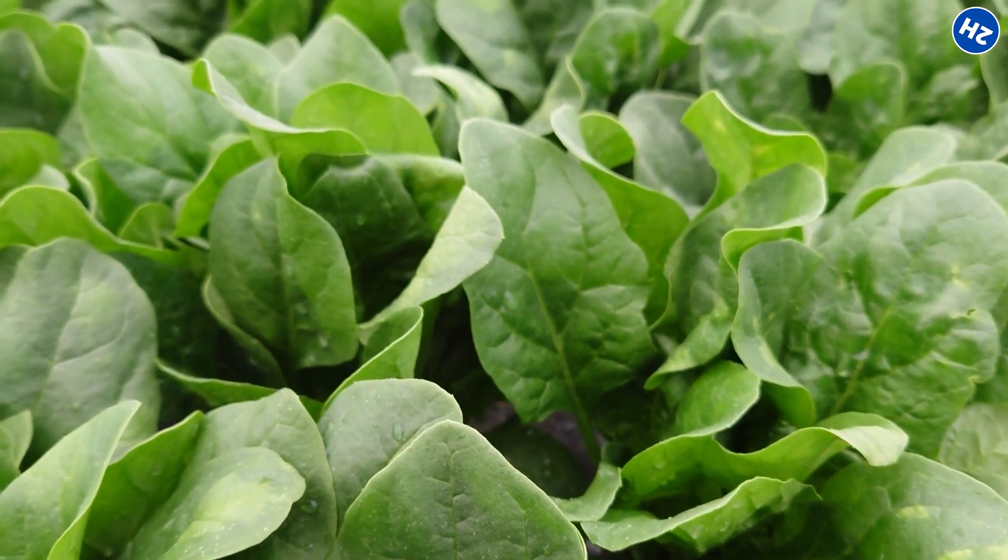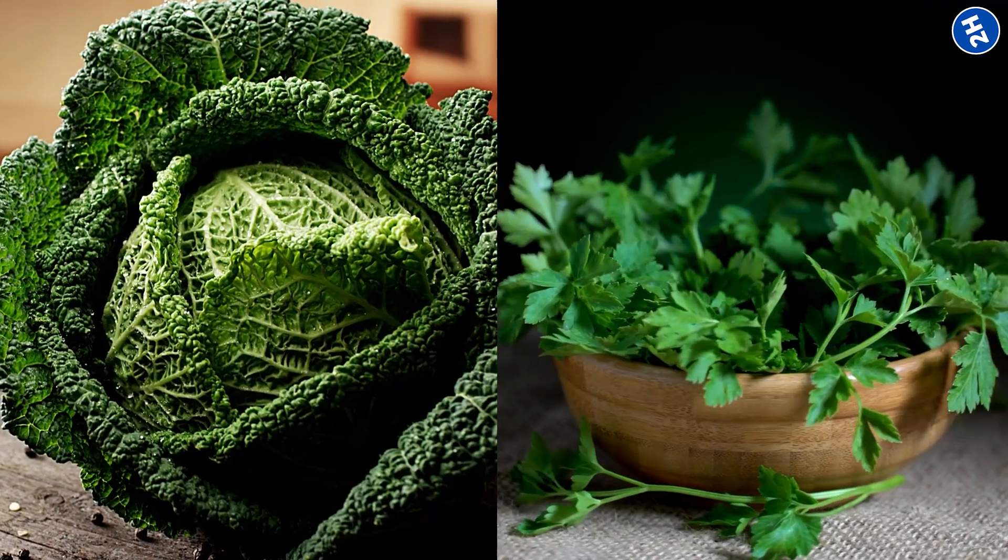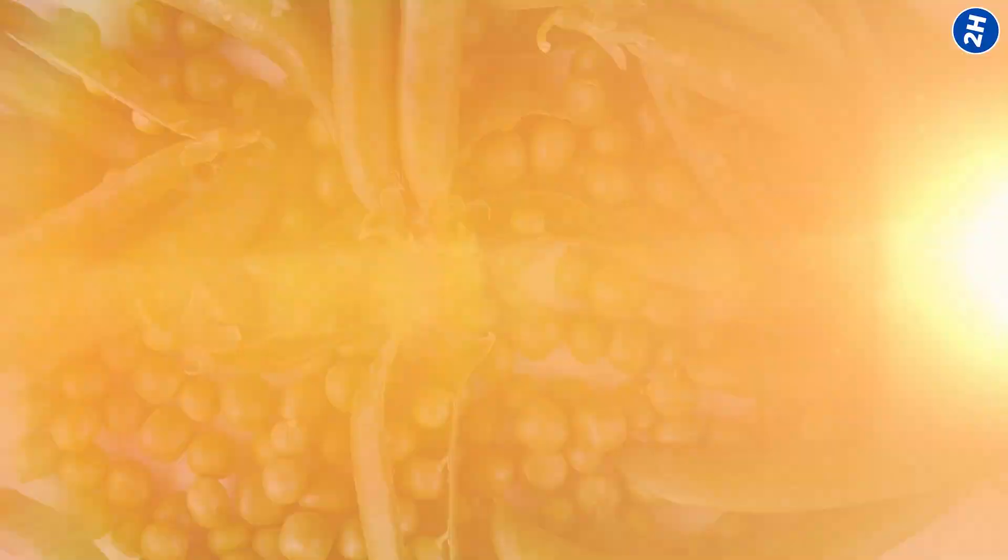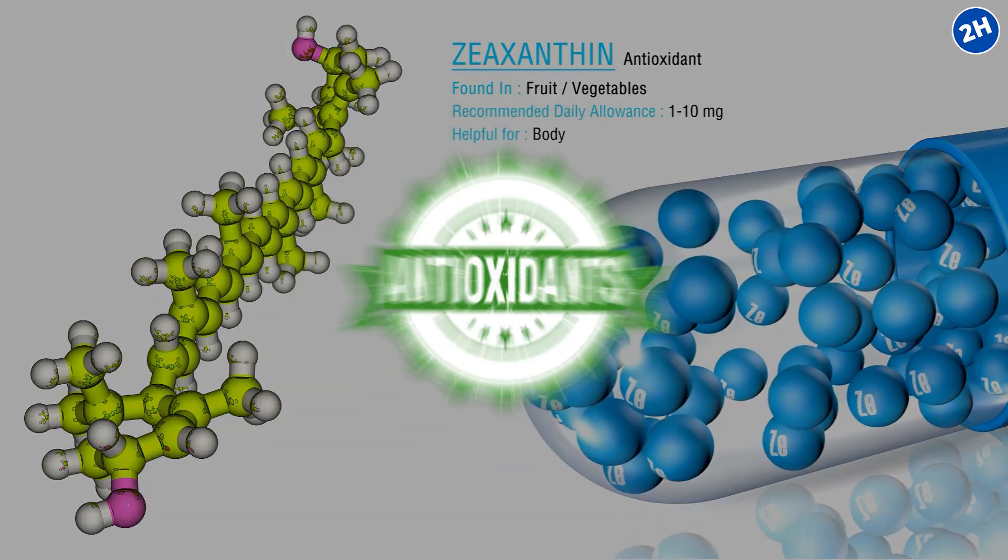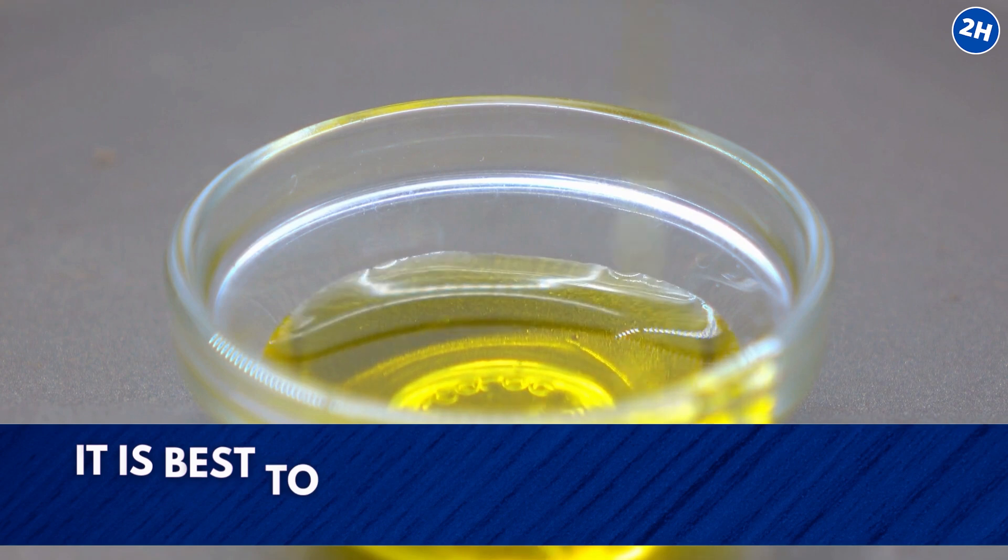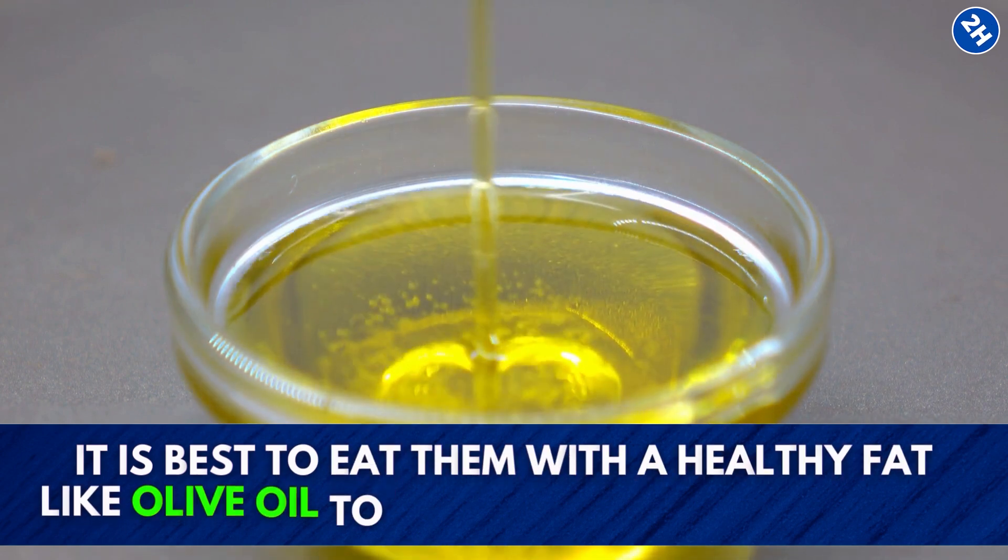Consuming foods high in zeaxanthin and lutein can reduce a person's risk of developing cataracts by as much as 50%. The best sources include spinach, Swiss chard, kale, parsley, pistachios, and green peas. Because lutein and zeaxanthin are fat-soluble antioxidants, it is best to eat them with a healthy fat like olive oil to increase their absorption.